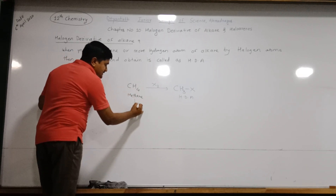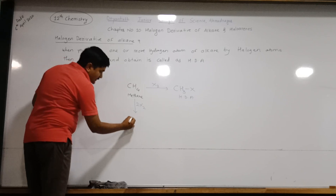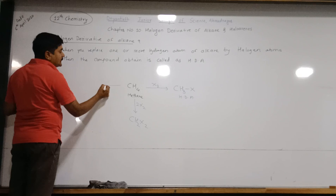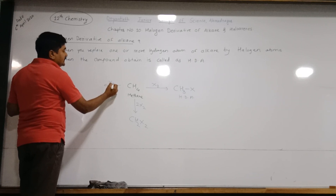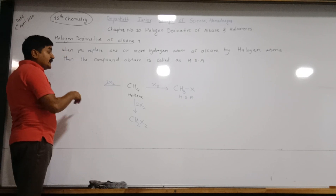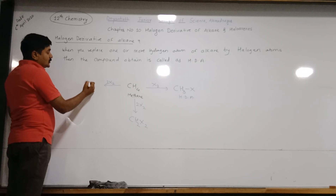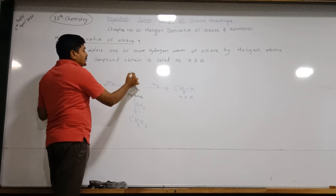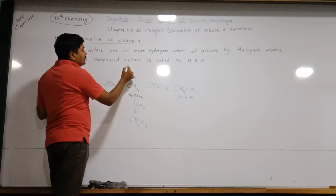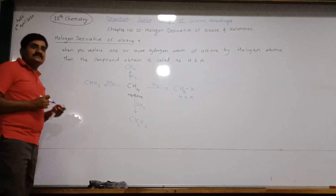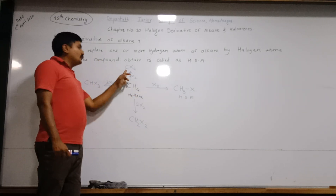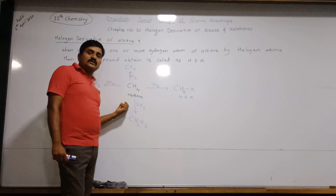You can replace two hydrogen atoms by two halogen atoms — again a halogen derivative of alkane. If you replace three hydrogen atoms by three halogen atoms, the compound obtained is also called a halogen derivative of alkane. And if you replace all four hydrogen atoms of the alkane by four halogen atoms, the compound obtained is also called a halogen derivative of alkane.